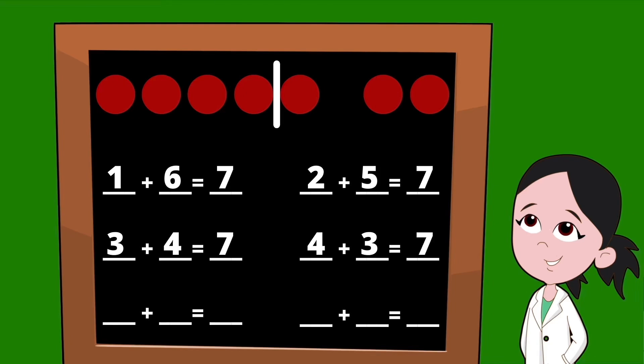Let's go ahead and slide our line over one more dot to find our next set of partners. On the left side of our line, we have five dots, so this set of partners starts with the number five. On the right side of our line, we have two dots, so our other partner is going to be a two. Five plus two equals seven.